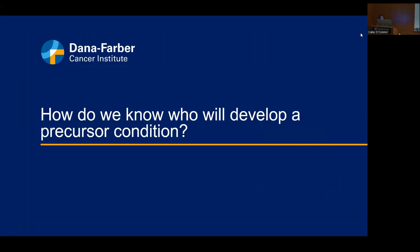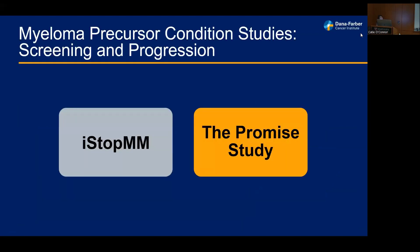How do we know who will get a precursor condition? There are two large screening studies. The I-STOP-MM study comes from Iceland, aiming to screen any individual over the age of 40 for a monoclonal protein or plasma cell disorder. The second is the POMIS study led by Dr. Irene Gobrail at Dana-Farber, which screens individuals with risk factors: either African-American descent, a first-degree relative with a plasma cell disorder, or two first-degree relatives with a hematologic malignancy over the age of 30.